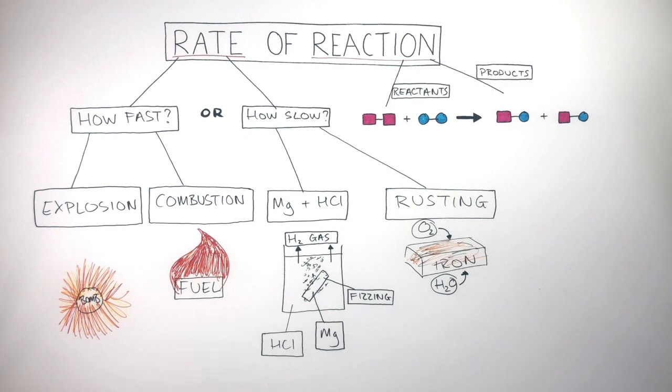We say explosions and combustion have a high or fast rate of reaction as their chemical reactions happen very quickly. Whereas rusting has a low or slow rate of reaction as rusting happens very slowly.